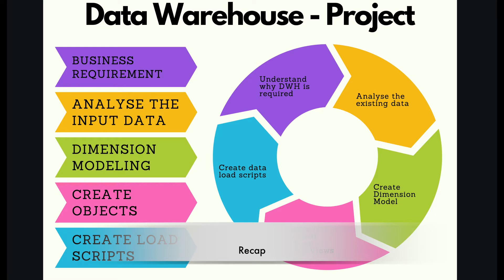The third step is creating dimension modeling. We focus a lot on the physical data model, and using that physical data model built in step 3 we create database objects in step 4. This typically includes schema, tables, and views if applicable. Once the database objects are ready, we create the load scripts — typically the historical load or the incremental load scripts for your staging tables or your EDW tables.